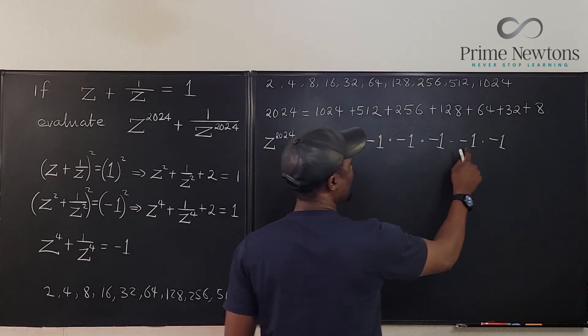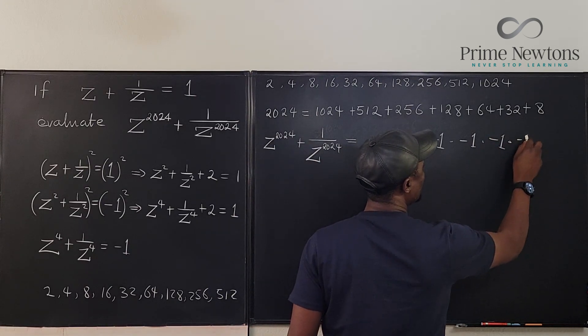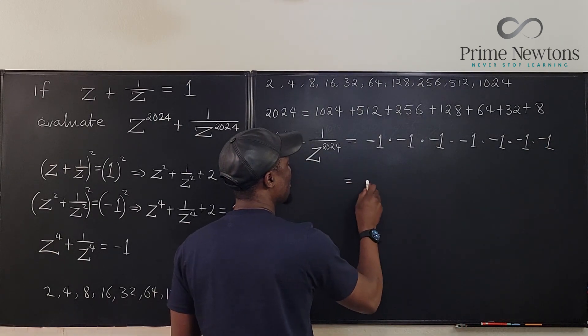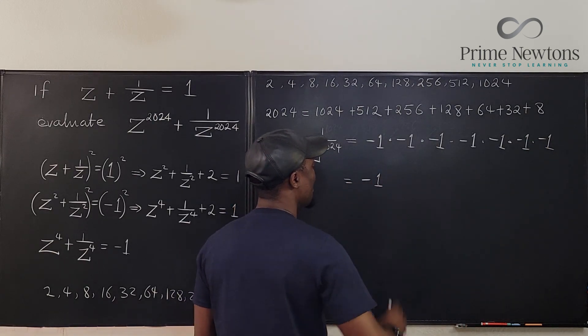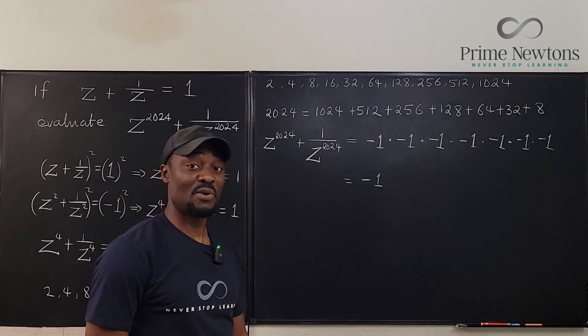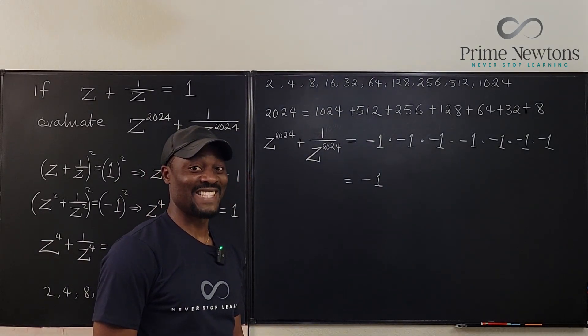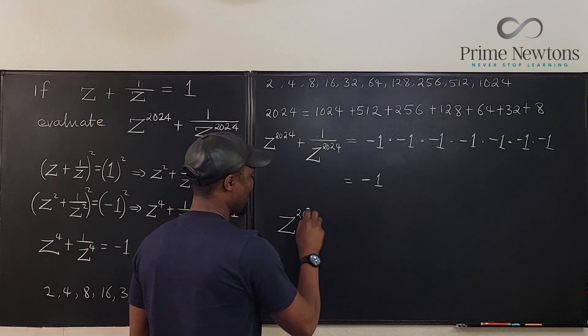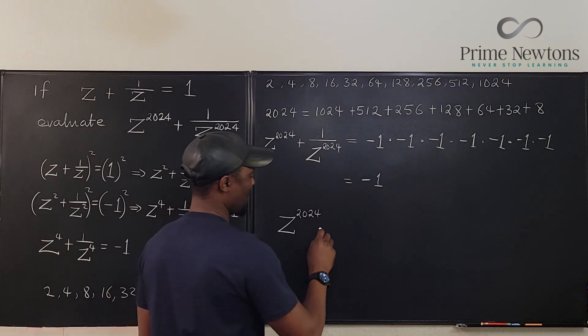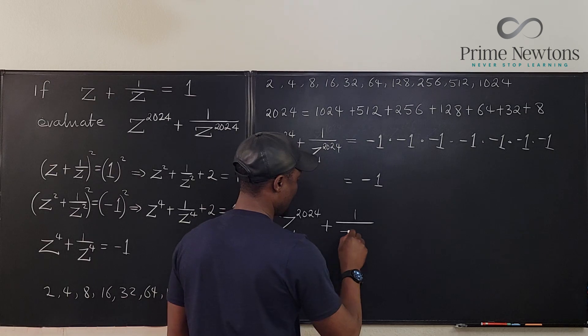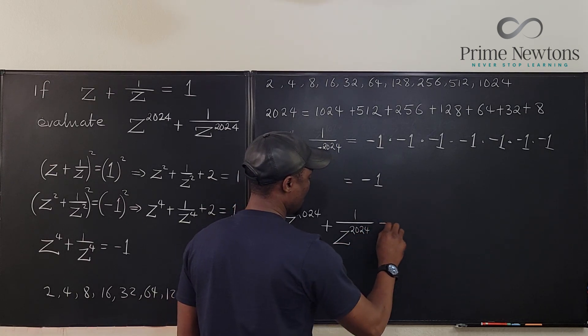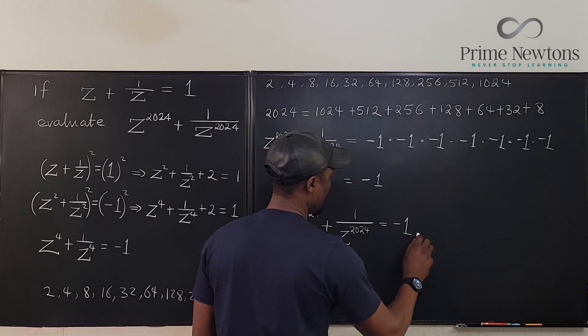1, 2, 3, 4, 5 times minus 1 times minus 1. So we get minus 1. So it looks like z to the 2024 plus 1 over z to the 2024 is equal to minus 1.